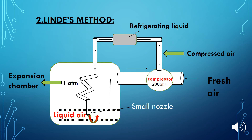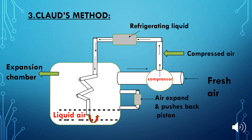The third method for the liquefaction of gases is Claude's method. In this method, cooling is produced by the free expansion of compressed gas into a low pressure region through a small nozzle, accompanied by doing mechanical work, usually by pushing back a piston. All gases, including hydrogen and helium, can be liquefied by this method because the cooling produced is greater than that produced in Linde's method.